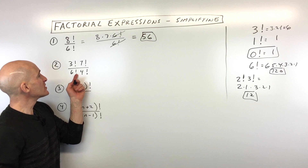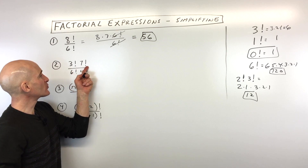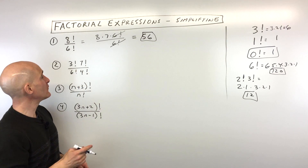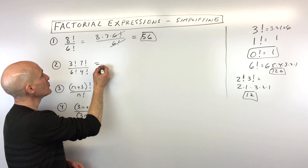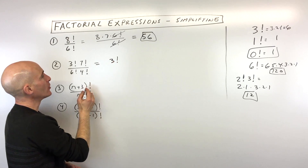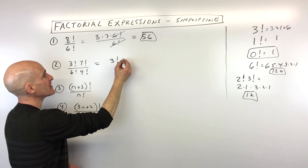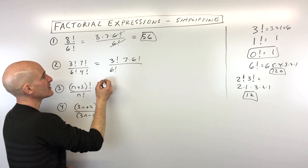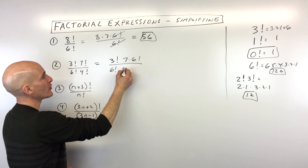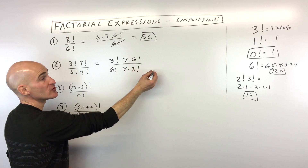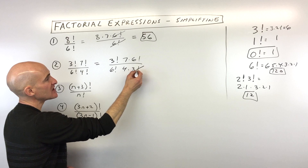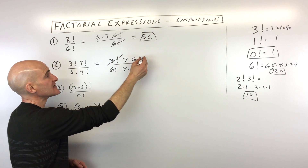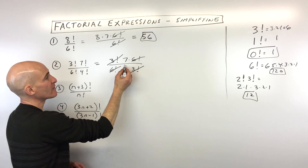Let's go to example number two. We've got three factorial times seven factorial divided by six factorial times four factorial. So what I'm going to do is leave this as three factorial. Seven factorial I'm going to write as seven times six factorial. Then the six factorial I'll leave as it is, and four factorial I'm going to write as four times three factorial — that's three factorial, right? You can see the three factorial in the denominator is canceling with the three factorial in the numerator, and same thing with the sixes. So we're really just left with seven over four.